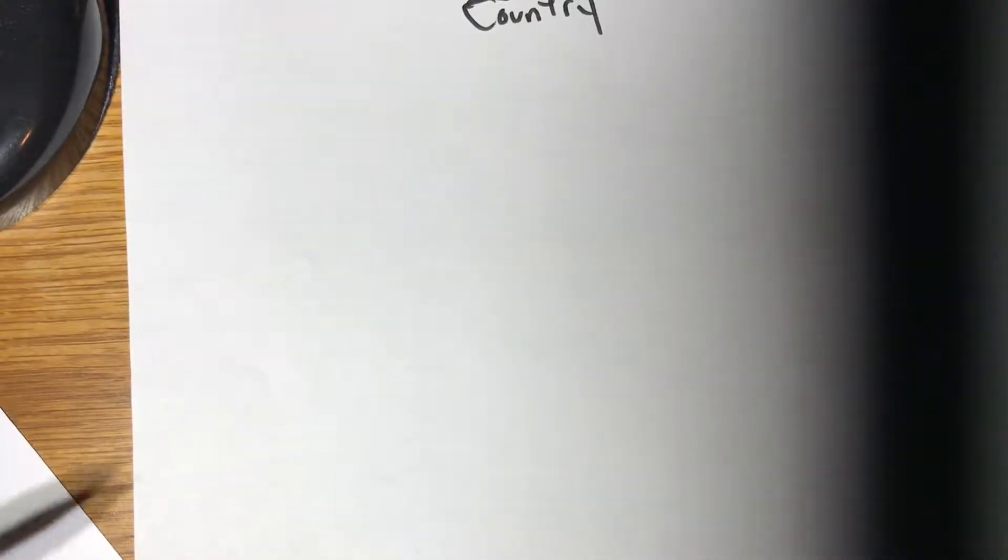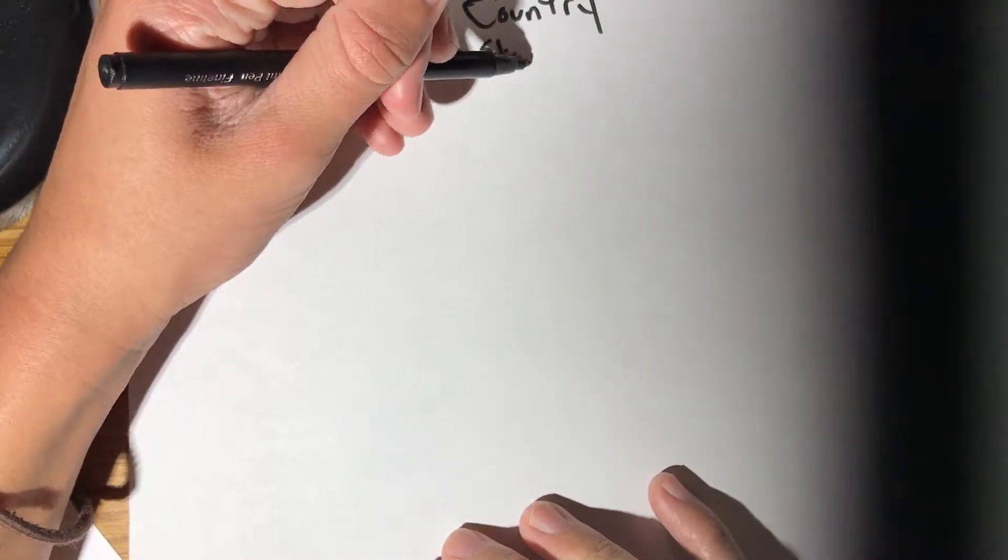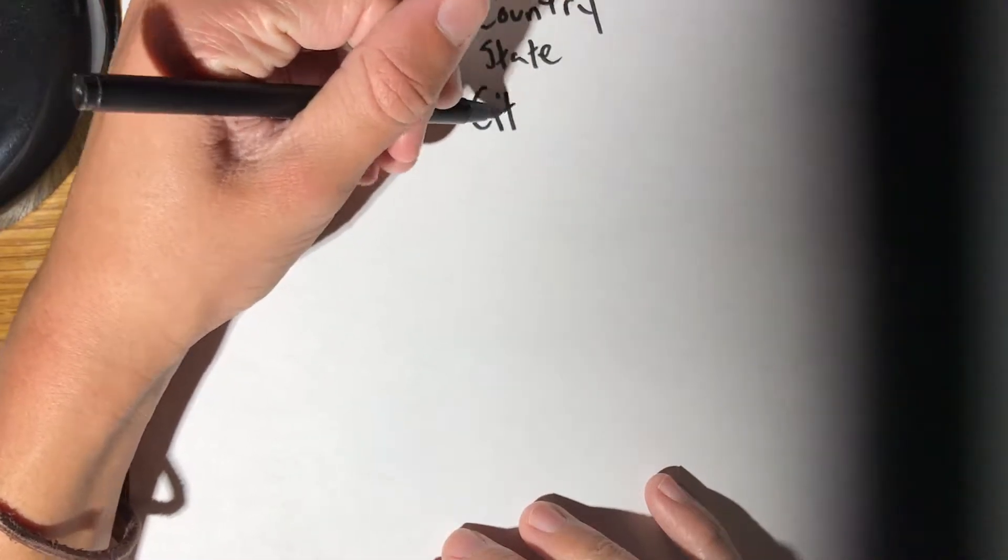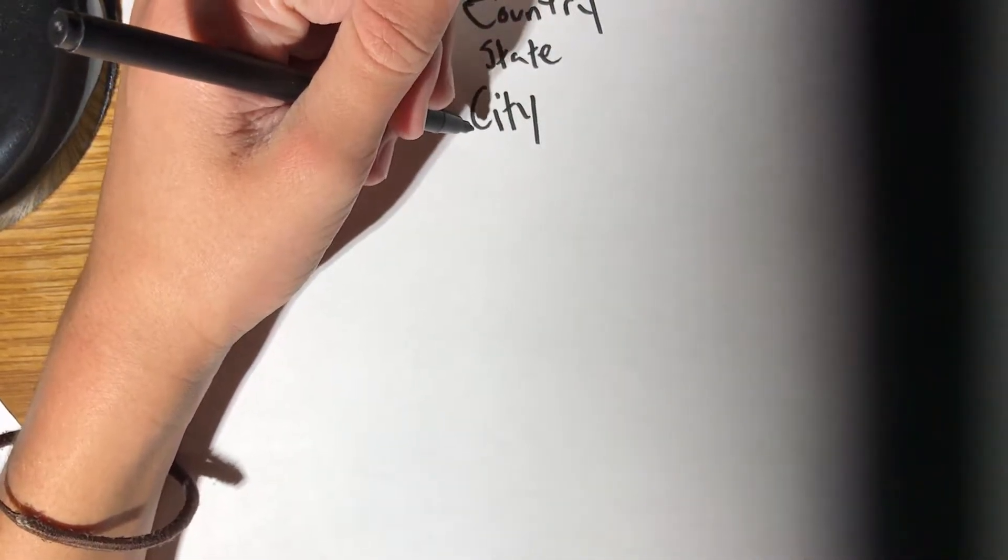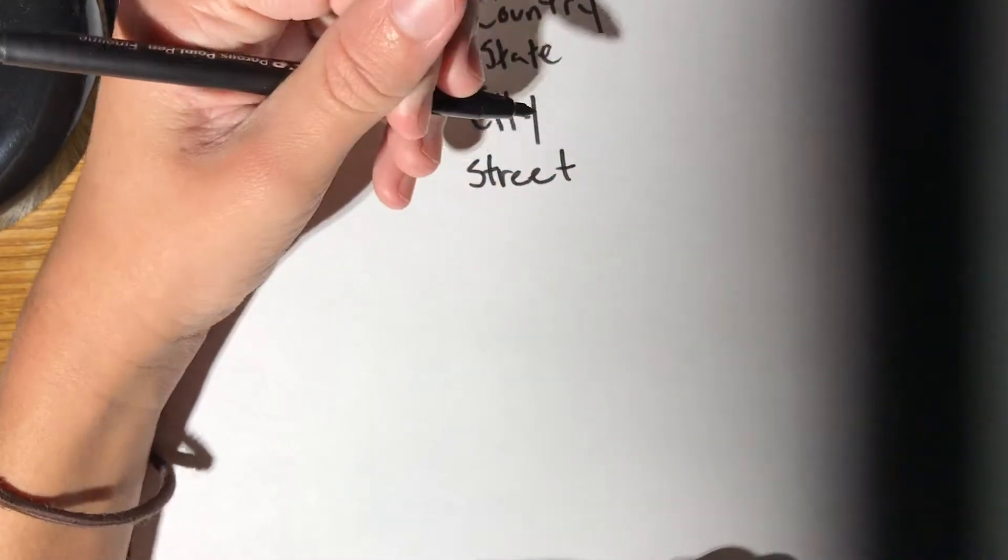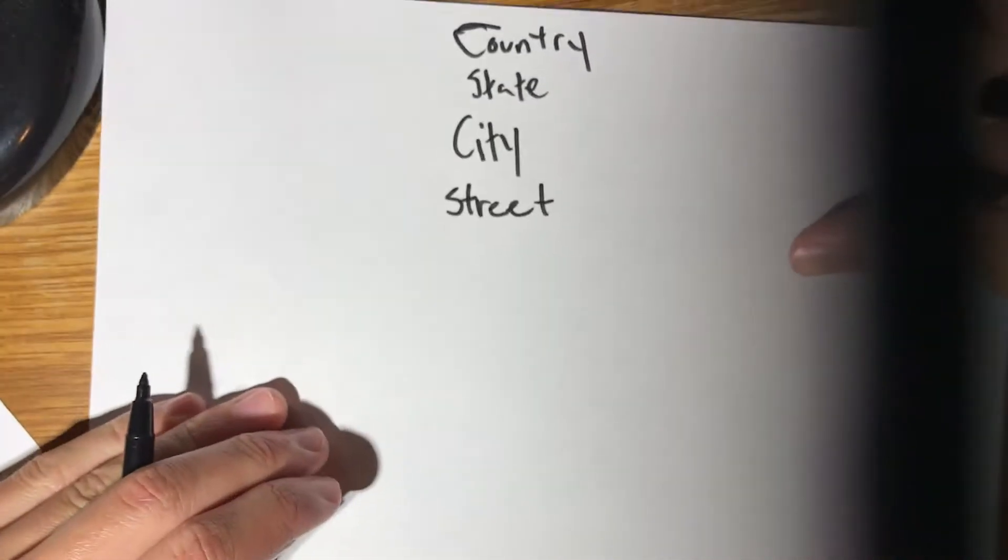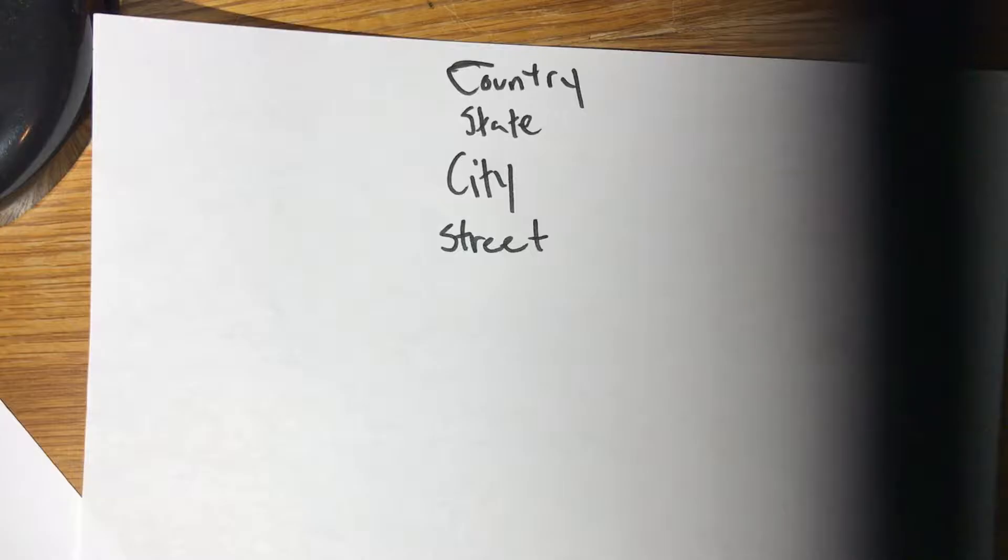Alright, let's get started. Quantum numbers are like an address to find an electron. You're going to have the most broad location, which is your country, then the second most broad, which will be your state, then you go into the city, and then you go into the street.